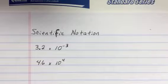4.6 times 10 to the fourth. This is how we made a big number smaller.